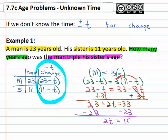Solving the two-step equation by subtracting twenty-three, two t equals ten, and finally dividing both sides by two we find out how much time is needed to go by to reach this goal. The time was five years ago when the man was triple his sister's age.